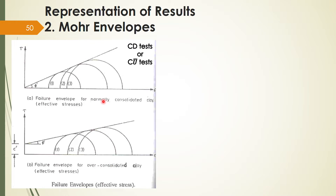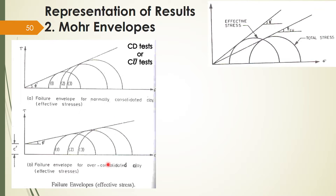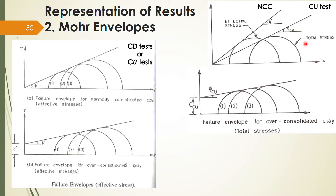For normally consolidated clay and over-consolidated clay the Mohr envelopes differ — these will be explained in the next module. For the UU test, values are obtained in terms of total stresses. There is a curve for over-consolidated clay and one for normally consolidated clay. When Mohr circles are drawn based on total stresses, the φ value obtained is denoted by φcu and is also known as the apparent angle of shearing resistance.